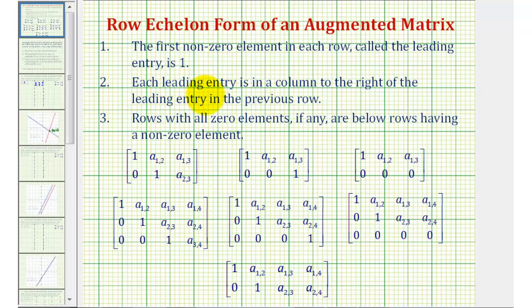Next, each leading entry is in a column to the right of the leading entry in the previous row. And then finally, rows with all zero elements, if any, are below rows having a nonzero element. So all these matrices fit these three conditions.